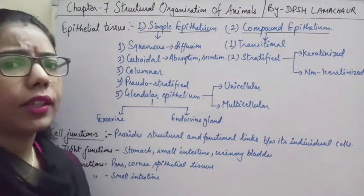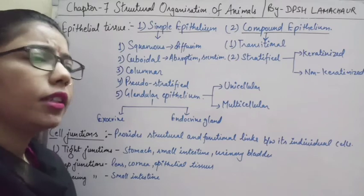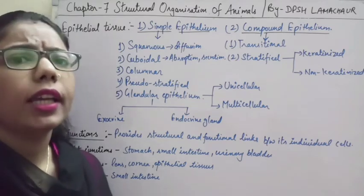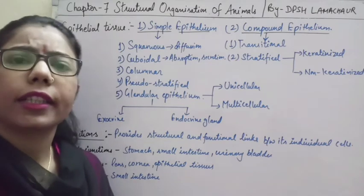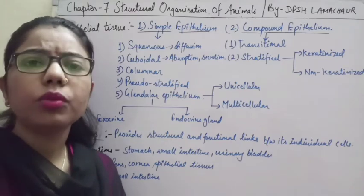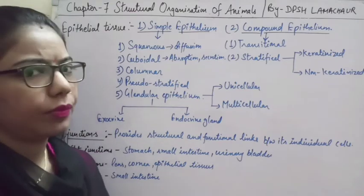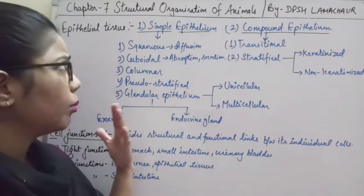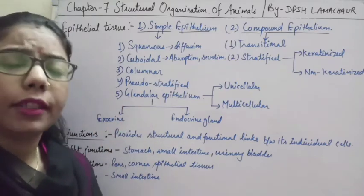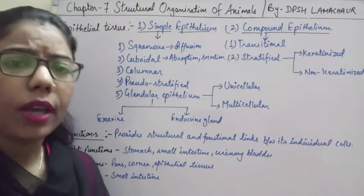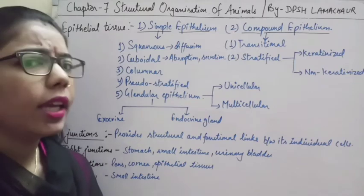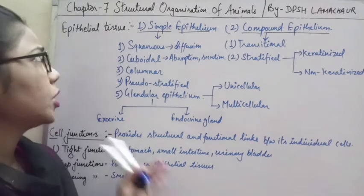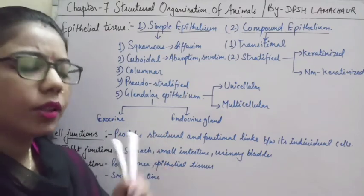On the basis of classification we have classified tissue into four types: epithelial tissue, connective tissue, muscular tissue, and neural tissue. We have also discussed different types of epithelial tissue, and now we will proceed towards more information about epithelial tissue.